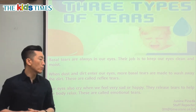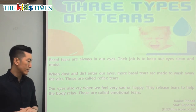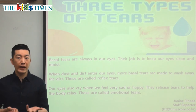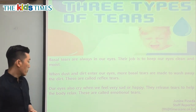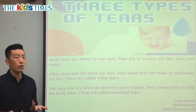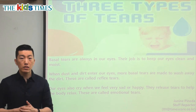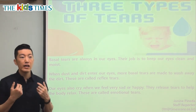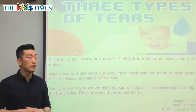Our eyes also cry when we feel sad or happy — they release tears to help the body relax. These are called emotional tears. When we're very sad or very happy, we start crying and those are called emotional tears. Sometimes after you cry when you're sad, you calm down and relax. If you laugh at a very funny joke and you're crying from laughter, after a while it helps you calm down and relax. Those are called emotional tears.